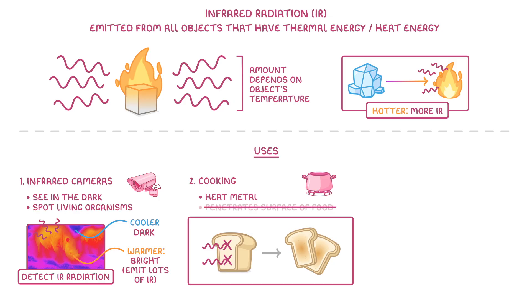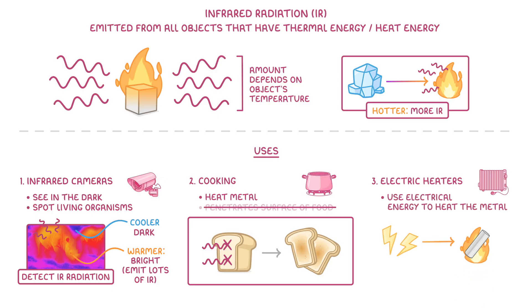We also make use of infrared radiation whenever we use electric heaters. These devices use electrical energy to heat up the metal of the heater, and then because it's so hot, it emits infrared radiation to the surroundings, which is able to heat up our rooms.